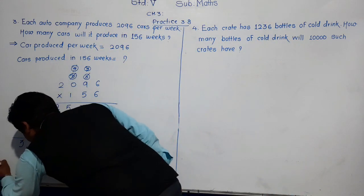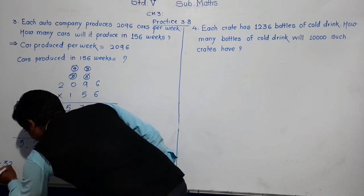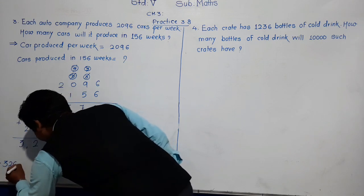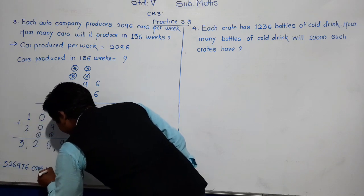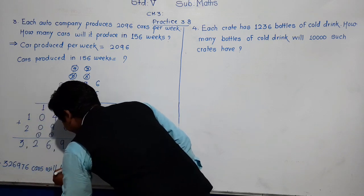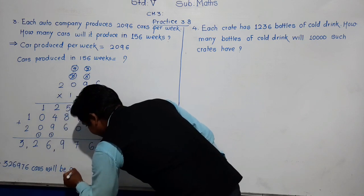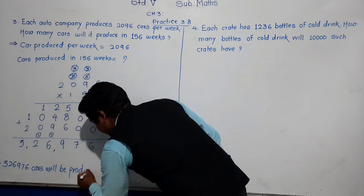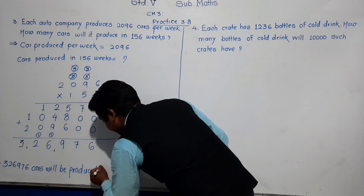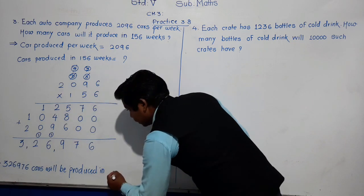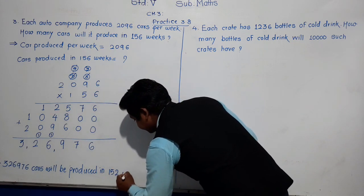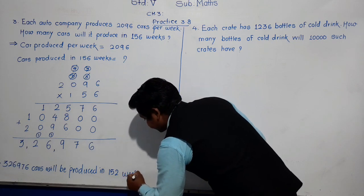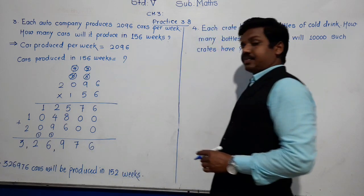So 3,26,976 cars will be produced in 156 weeks.